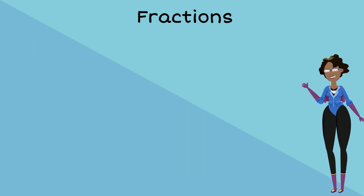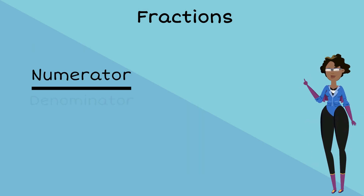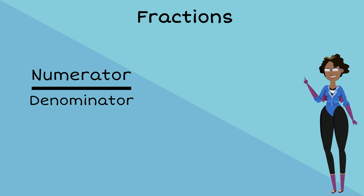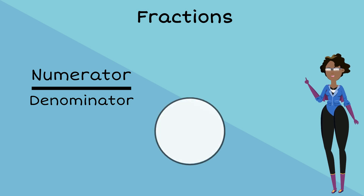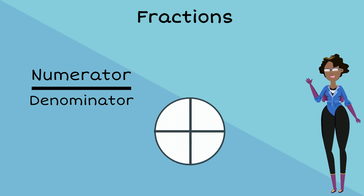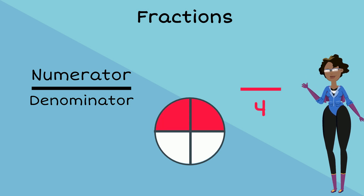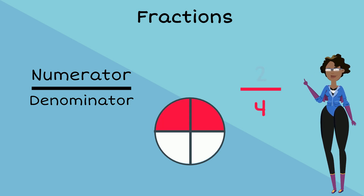Fractions are made up of a numerator and a denominator. The numerator goes at the top while the denominator goes beneath the fraction line. When a whole quantity is split into equal parts, the number of equal parts is our denominator. The number of highlighted parts represents the numerator.